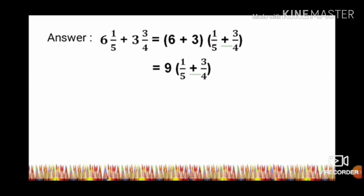To add 1/5 and 3/4, find the common denominator. 1 times 4 over 5 times 4 equals 4/20. 3 times 5 over 4 times 5 equals 15/20. 4 plus 15 equals 19/20. The result is 9 and 19/20 meters.